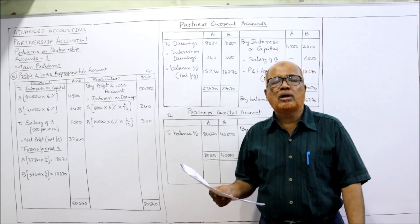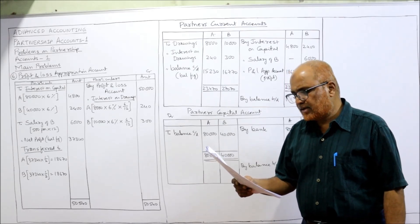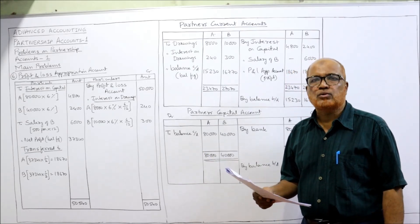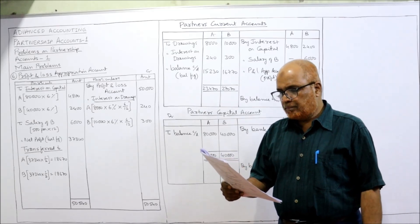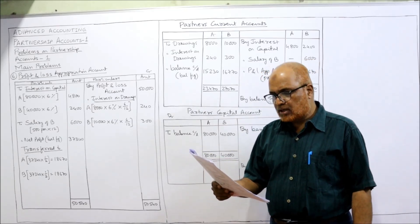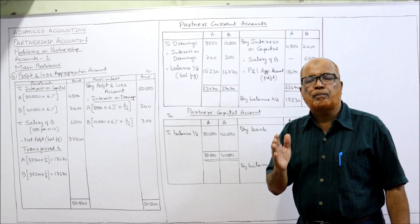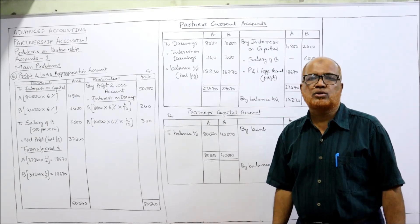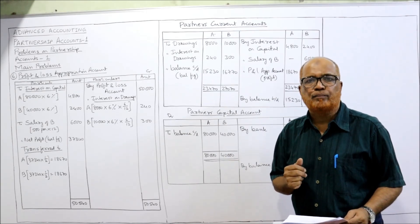But in this problem nothing is mentioned, so we calculate the interest on drawing only for six months, 6 by 12. Profit before adjustment amounted to 50,000. Assuming the capitals to be fixed, prepare the profit and loss appropriation account and the account relating to partners. The account relating to partners is the current account because capital accounts are taken as fixed.